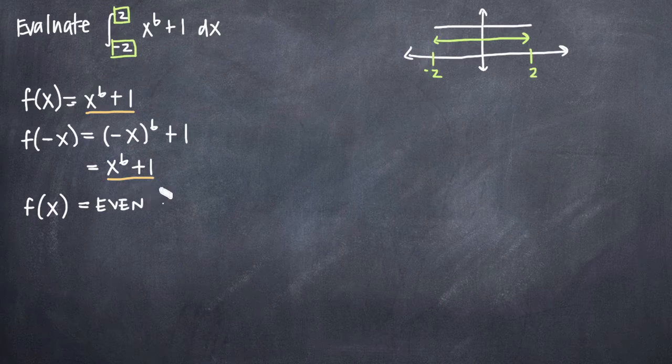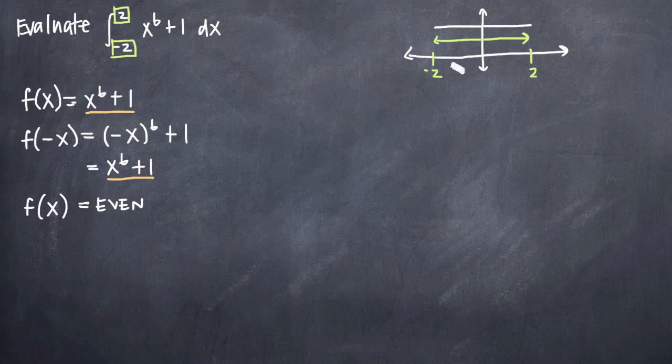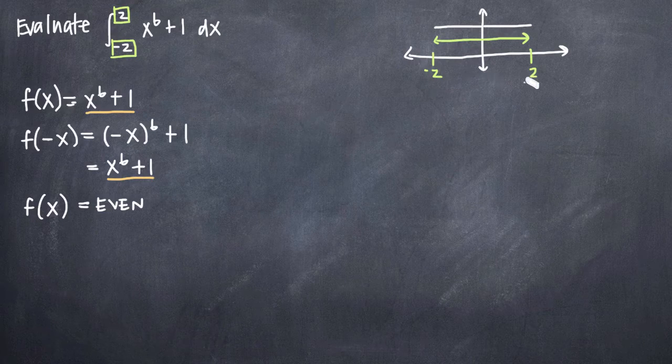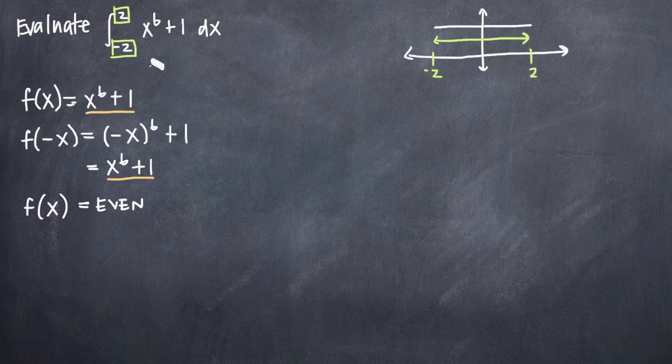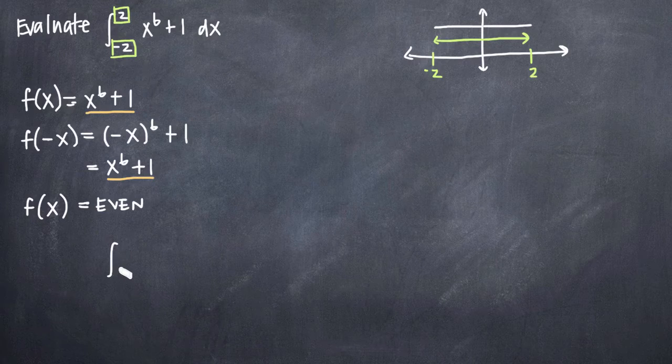So now that we've proven that f of x is even, we can go ahead and evaluate the integral and take advantage of the simplification that we were talking about. So because the function is even and because we're evaluating from negative 2 to positive 2, the same distance on the left of the y-axis as on the right of the y-axis, instead of evaluating from negative 2 to positive 2,